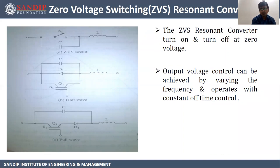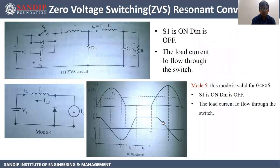Next is ZVS — zero voltage switching resonant converters. Here we have used a capacitor across the switch. ZVS resonant converters turn on and turn off at zero voltage. The output voltage control can be achieved by varying the frequency and it operates with constant off-time control. This is the complete circuit of ZVS.